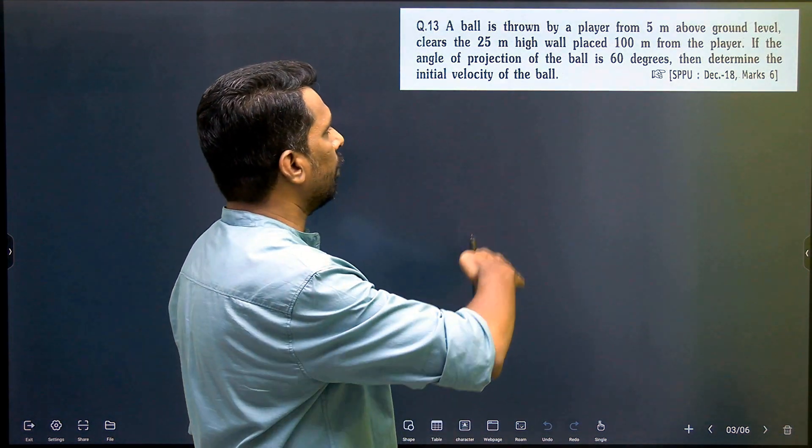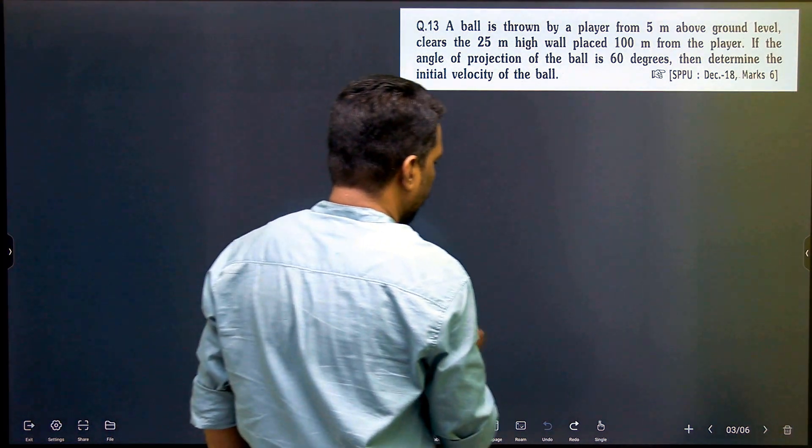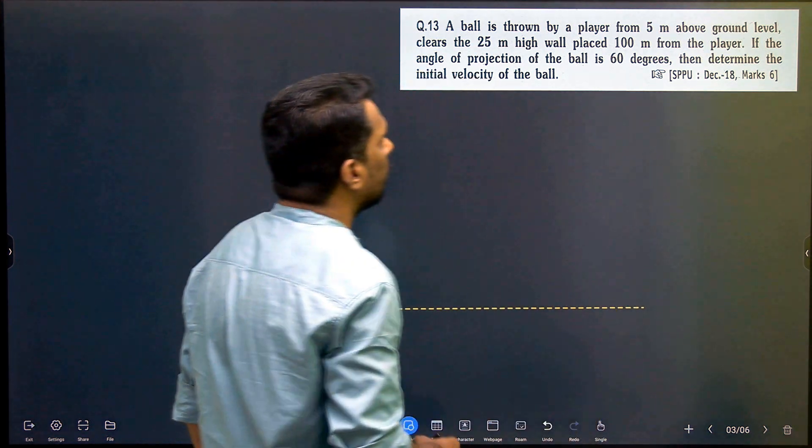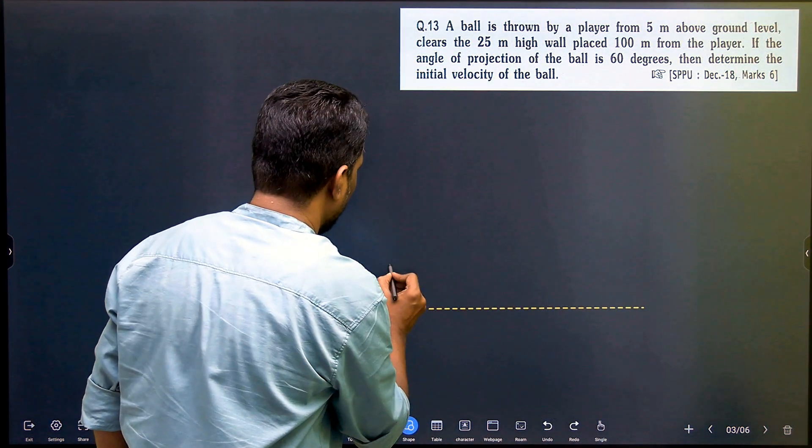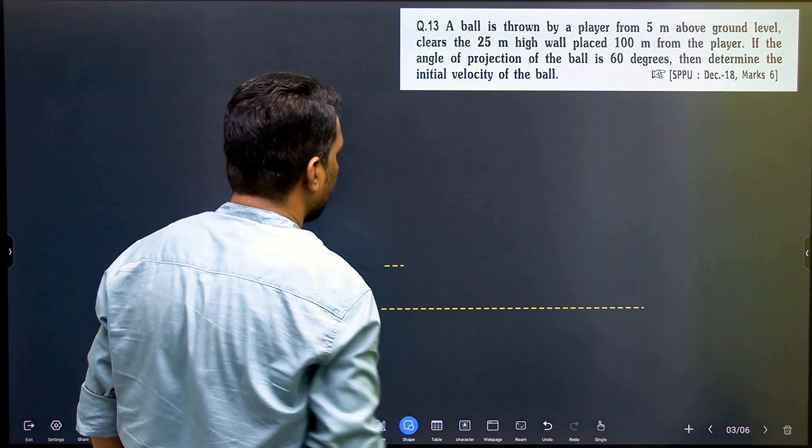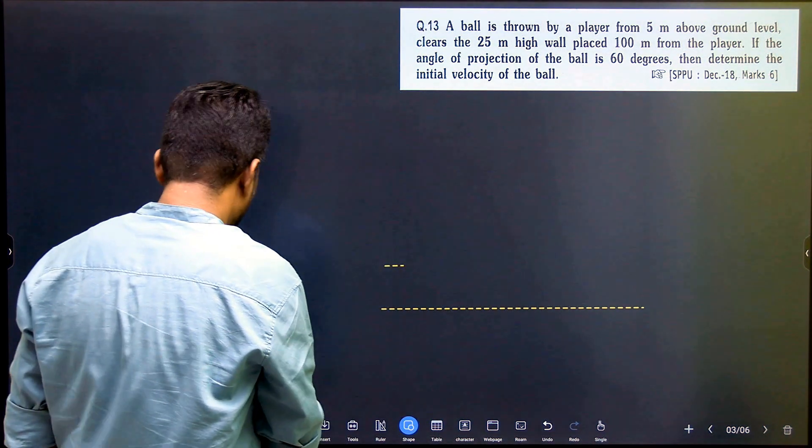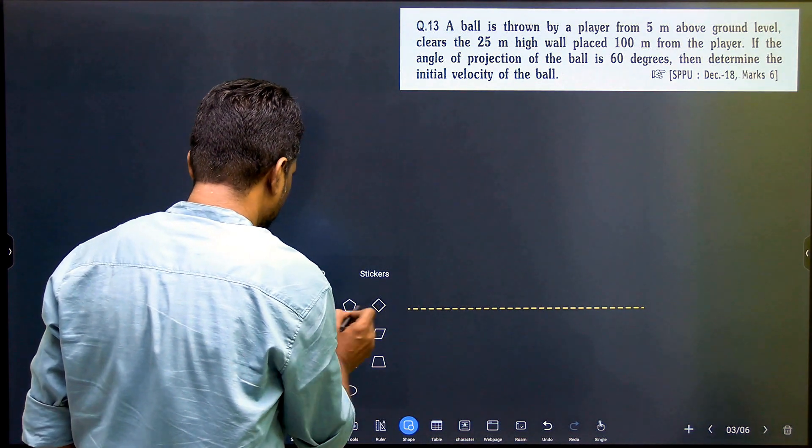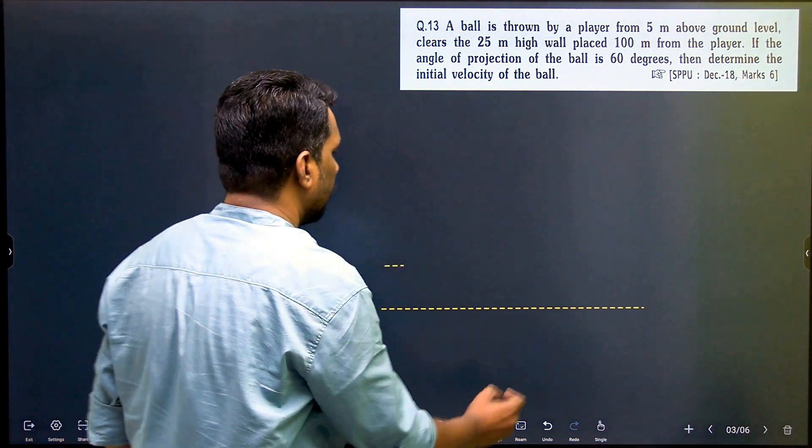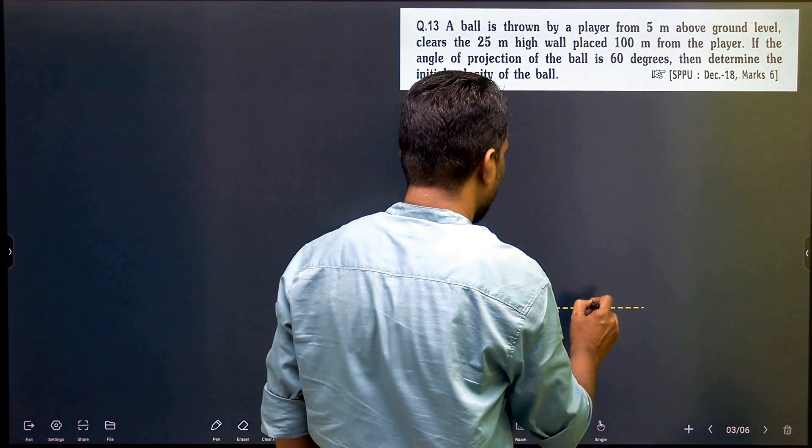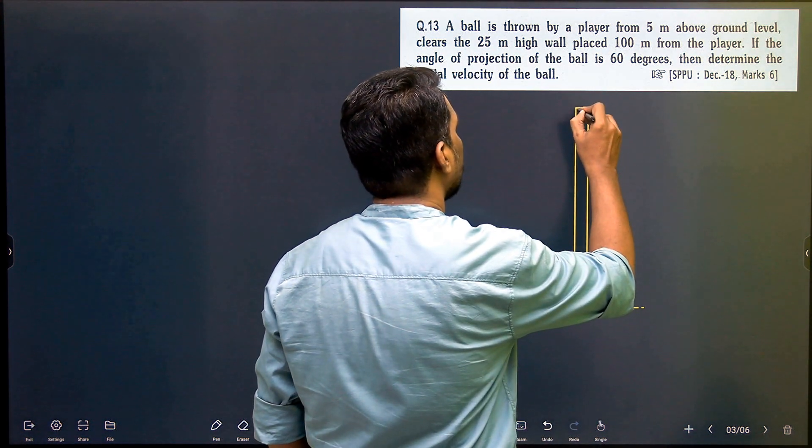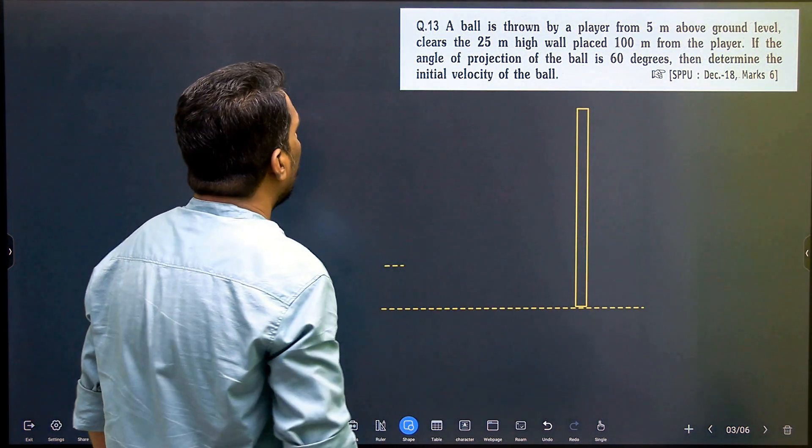Let's read the question first. A ball is thrown by a player from 5 meters above the ground level. If I have taken the ground level here, then I take the ground level to 5 meters above. It has to clear the 25 meters high wall. Let's take a wall here which is of 25 meters high.